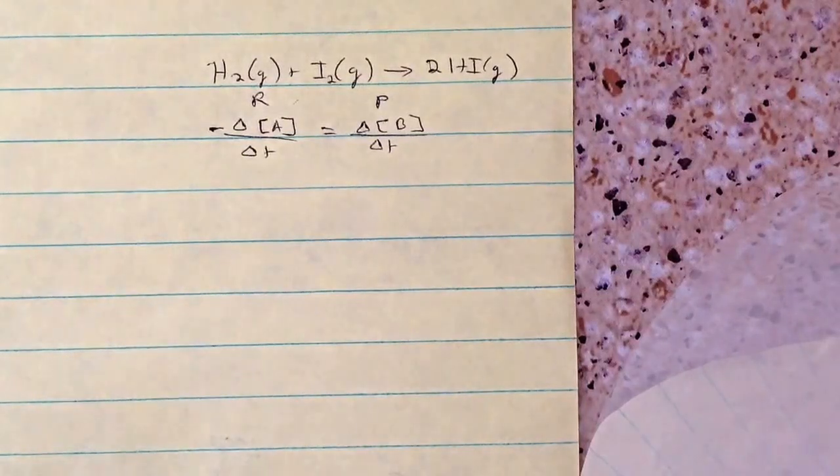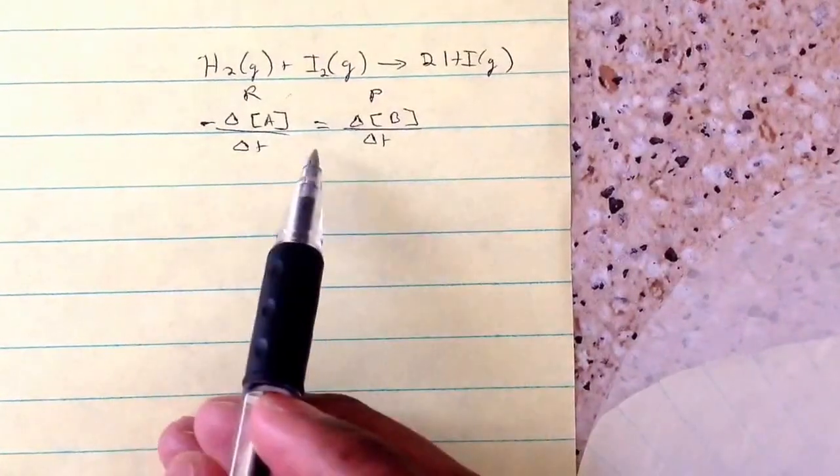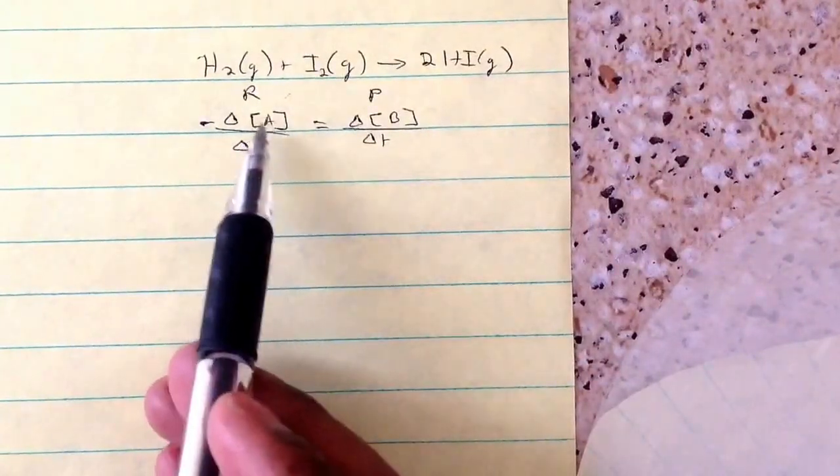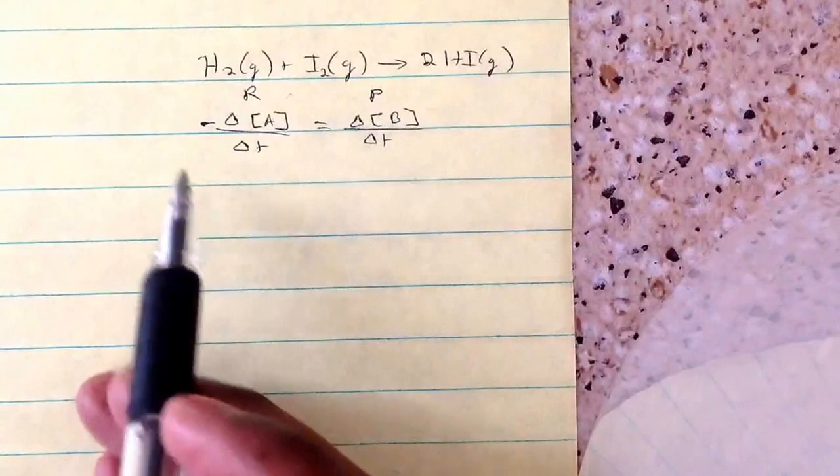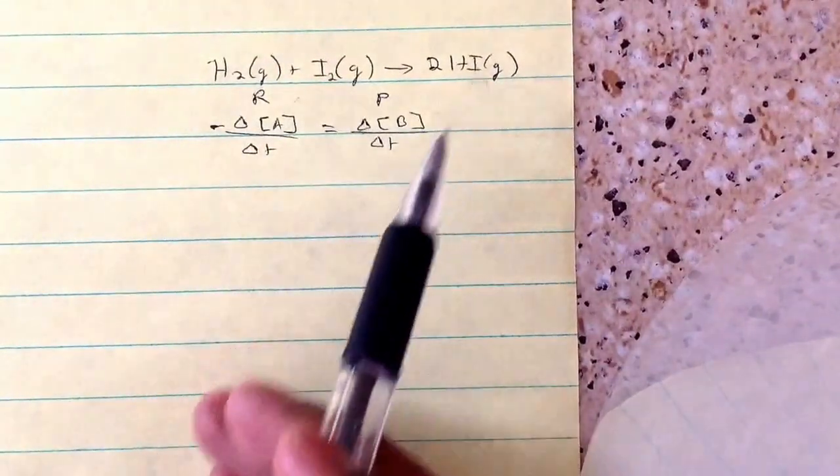If you have to write the rate expression for this chemical equation, the formula is this. If you have a generic compound A and a generic compound B, the reactants are always going to be negative, and the products are always going to be positive.